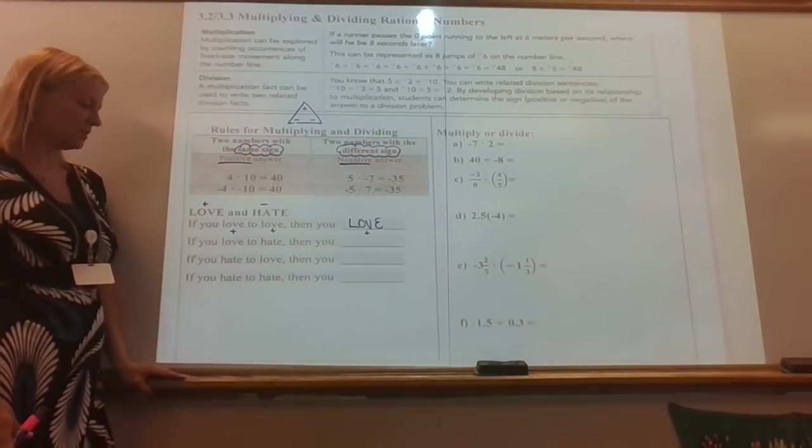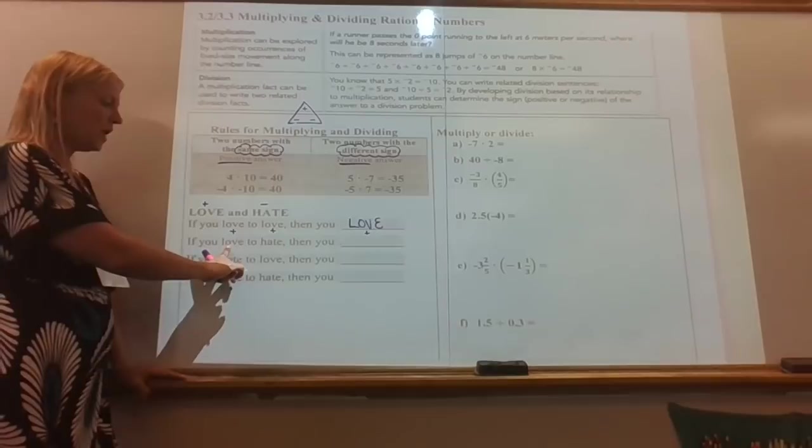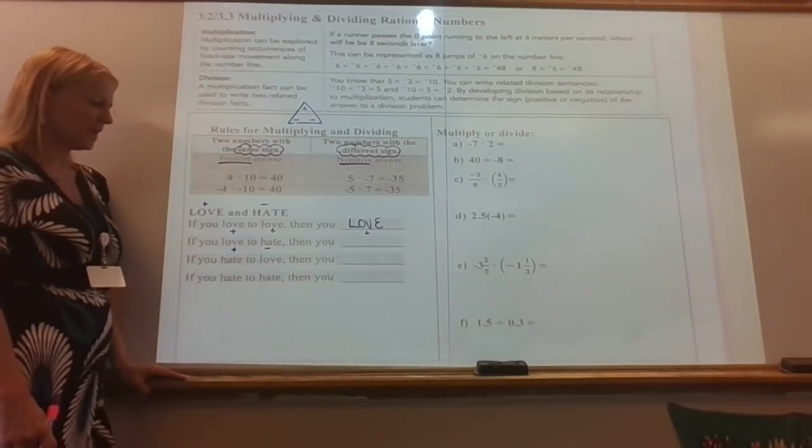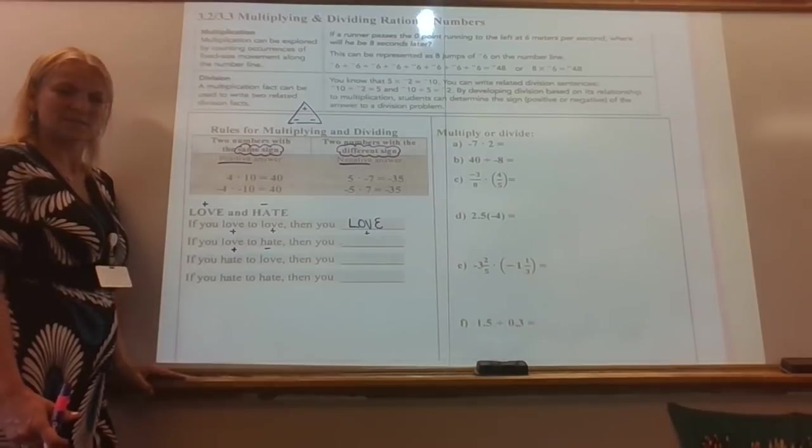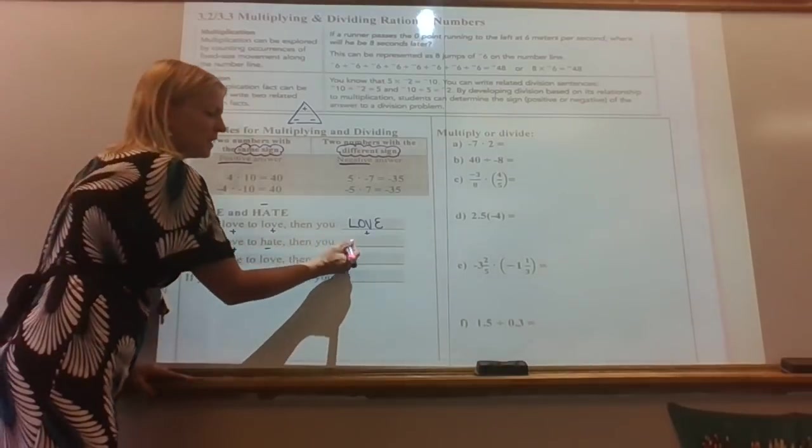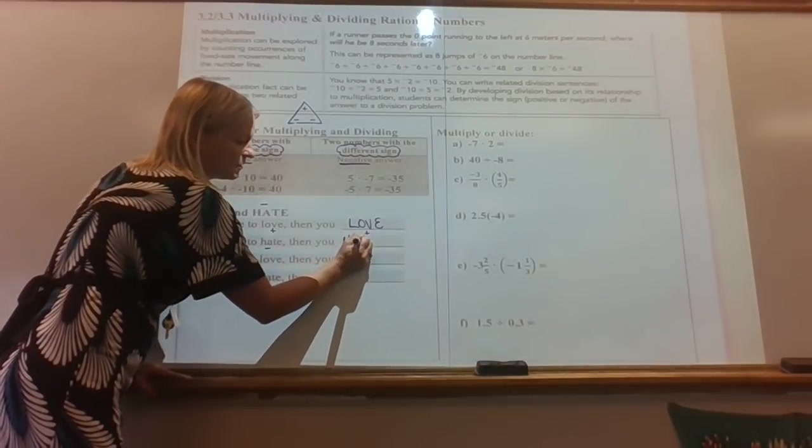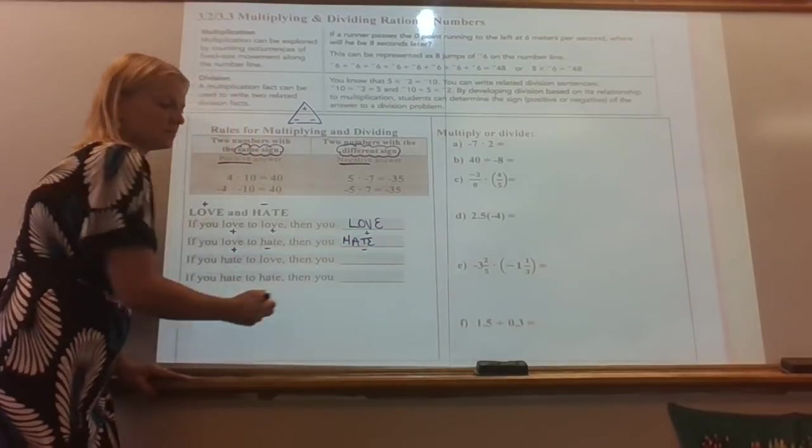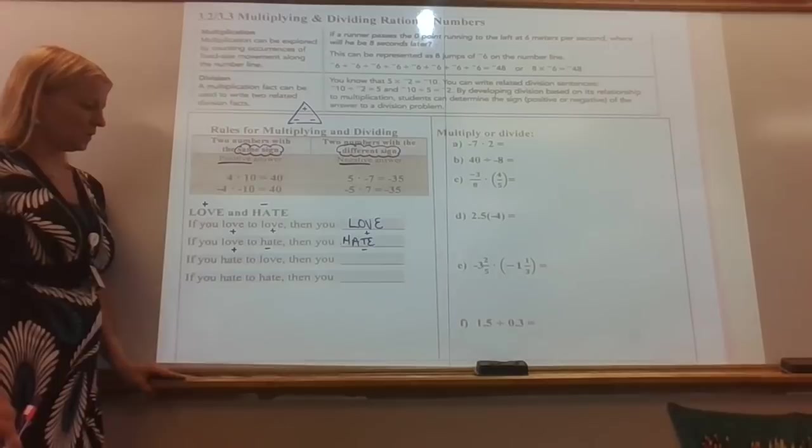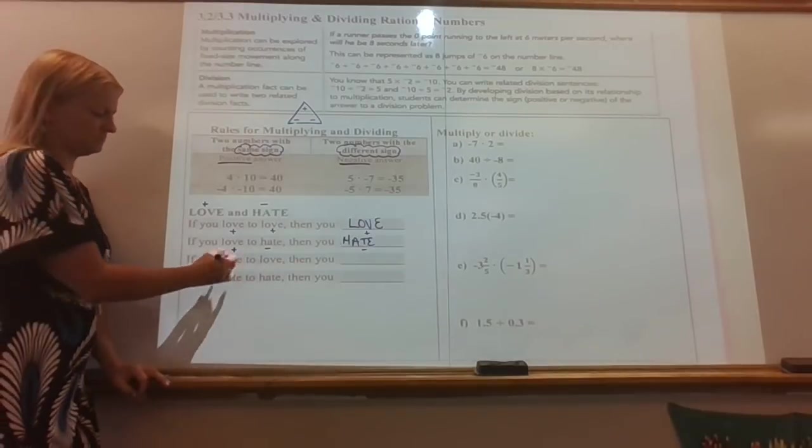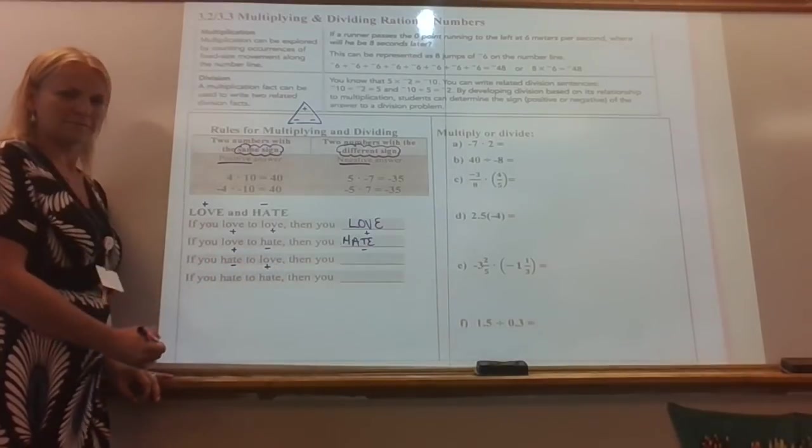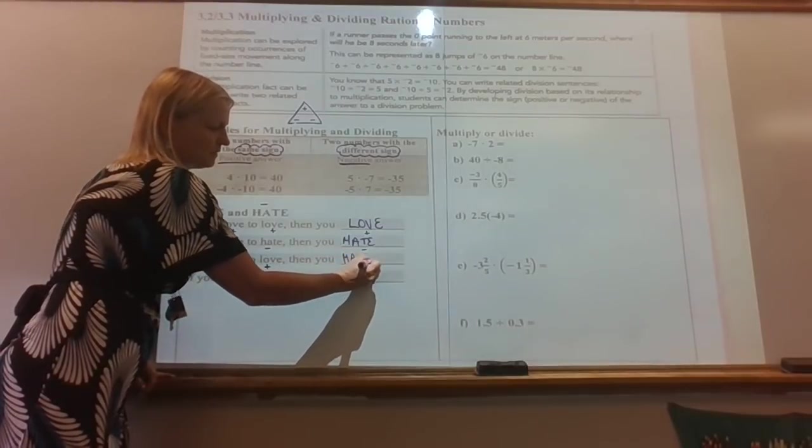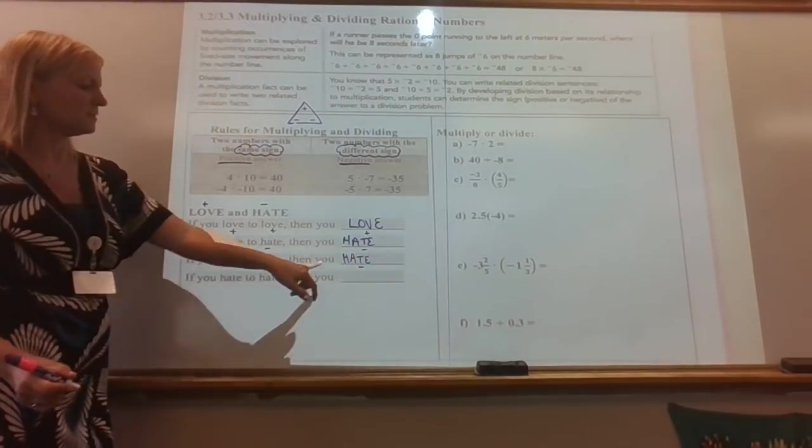Let's look at all the scenarios now. What if you love to hate? If you love hating, that doesn't make you a lover, that would make you a hater, right? So that's showing you a positive and a negative results in a negative. What if you hate to love? Hating to love, well, that would also make you a hater. So that's showing you a negative and a positive makes a negative.